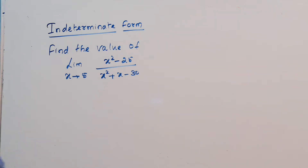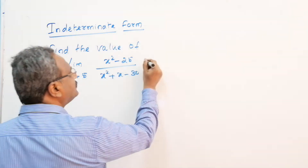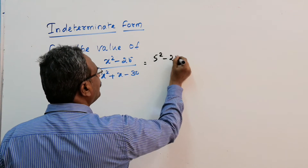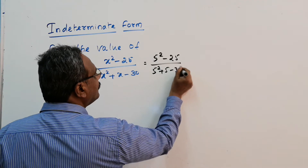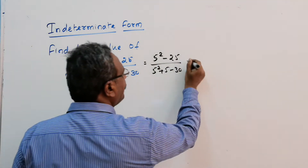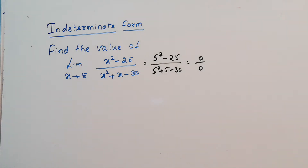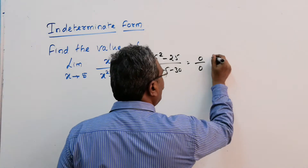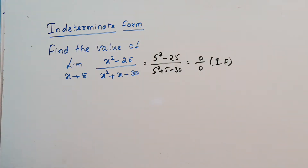When we want to evaluate the limit, we are going to substitute the value of x. Substituting x equals 5: this is 5 squared minus 25 divided by 5 squared plus 5 minus 30, which gives 0 divided by 0. Zero cannot be divided by zero — this is called indeterminate form.